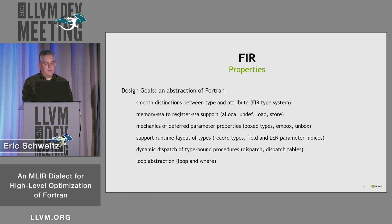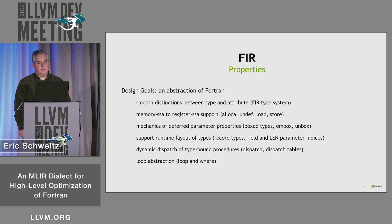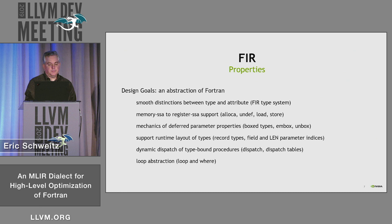There's also support for record types, including deferred fields. In Fortran, it's possible to define a derived type where fields can be optimized in their order, and field size may not be known until runtime. We need ways to describe that, including length parameters associated with the derived type itself. We also have object-oriented features, so we want dispatch and dispatch tables to handle those, along with some loop abstractions — a high-level loop and conditional where.